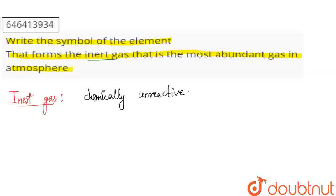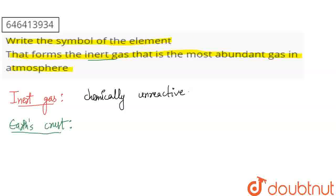Now, if I talk about the Earth's atmosphere, we have plenty of elements present, but some elements are more abundant. The element that is an inert gas and also the most abundant gas in the atmosphere — the only inert gas that is most abundant in the atmosphere — is Argon.